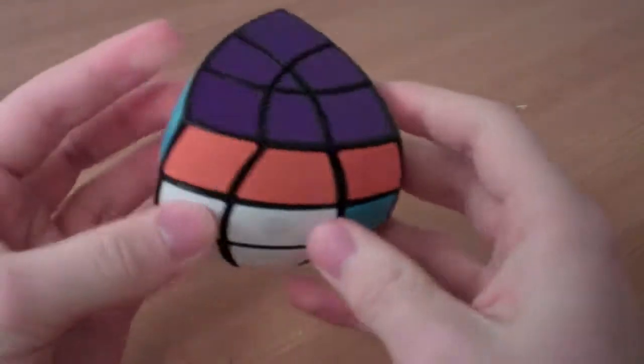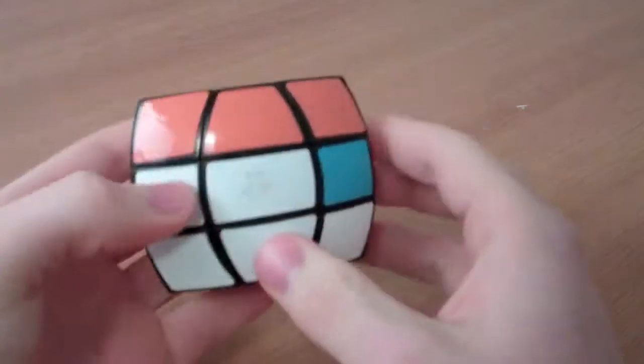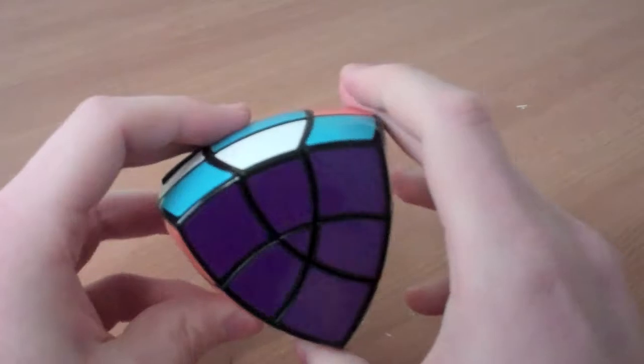So now the bottom layer is solved and the top corner pieces are always solved. And so all that's left is the edge pieces and the middle layer. And I like to solve these at the same time.